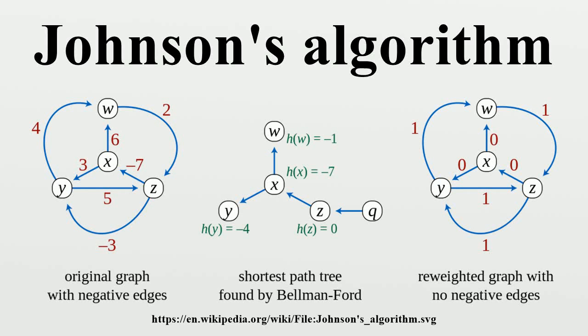Johnson's algorithm is a way to find the shortest paths between all pairs of vertices in a sparse, edge-weighted, directed graph. It allows some of the edge weights to be negative numbers, but no negative weight cycles may exist.